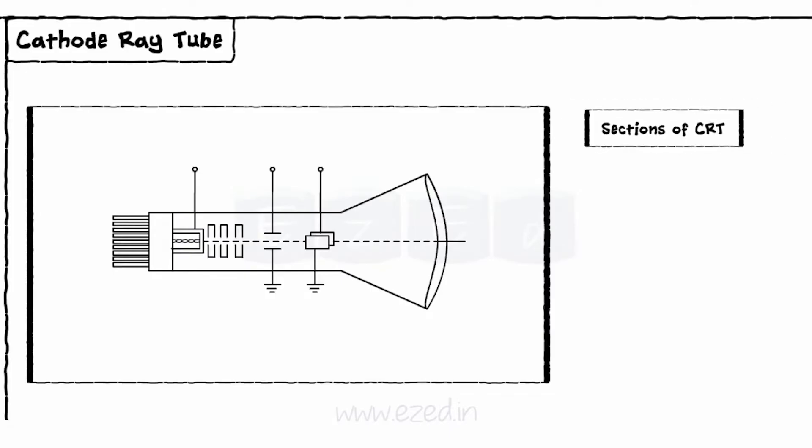It consists of three main sections: electron gun assembly, deflection plates, and the phosphorous screen.